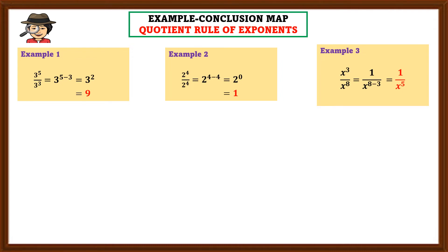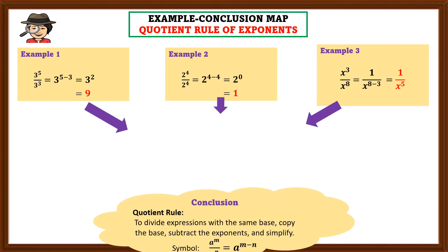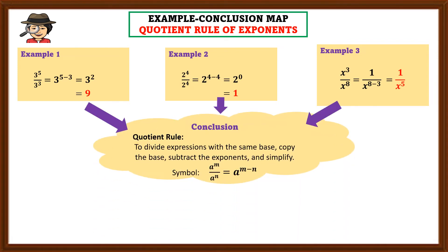Observe the pattern of the given examples. From that, you are going to create your own conclusion. We have concluded that the quotient rule states: to divide expressions with the same base, copy the base, subtract the exponents, and simplify if possible.